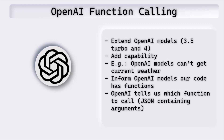It can't retrieve that information. However, what OpenAI have done a few months back is they've given us the ability to inform OpenAI that our code has some functions which can get weather information — like getting the current weather or getting the weather forecast. If we inform OpenAI that our code has these functions and provide our question along with it, then OpenAI tells us which function we need to call from our code based on the question. If we ask for the current weather and tell OpenAI we have a function called get current weather, it tells us to call that function and also what value the arguments like location should be.